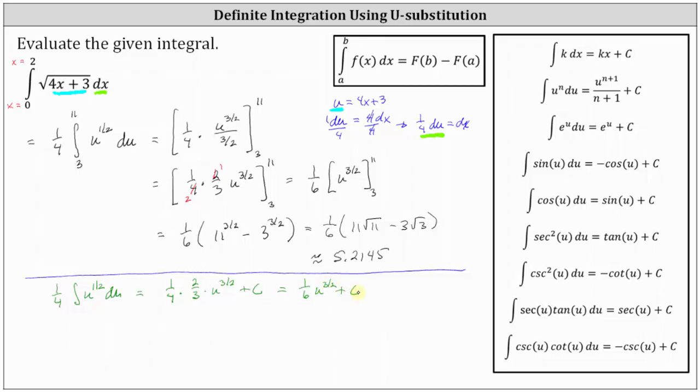So now from here, if we wanted to, we could write the antiderivative in terms of x, leave off the plus c, and evaluate the original definite integral using the original limits of integration from 0 to 2. And I just want to show that. We would have one-sixth times the quantity 4x plus 3 to the three-halves. And again, because we have the antiderivative in terms of x, we use the limits of integration from 0 to 2. Factoring out the one-sixth.